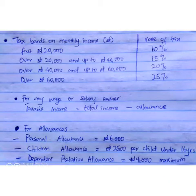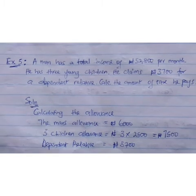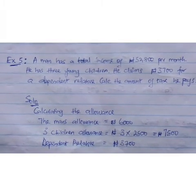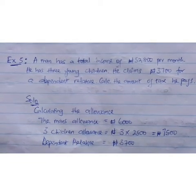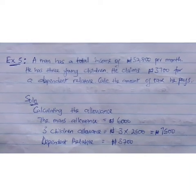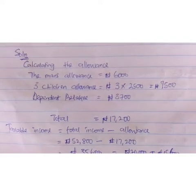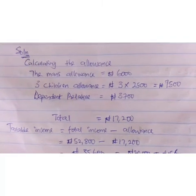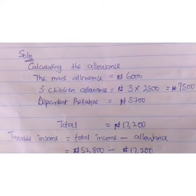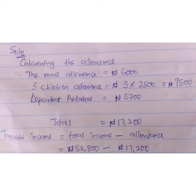Income tax. Having gone through the last slide thoroughly, let's answer Example 5. A man has a total income of 52,800 naira per month. He has 3 young children. He claims 3,700 naira for a dependent relative. Calculate the amount of tax he pays. First, we calculate the allowance: the man's personal allowance, 3 children at 2,500 naira each amounts to 7,500 naira. The man claims 3,700 naira for a dependent relative. Total allowance: 70,200.